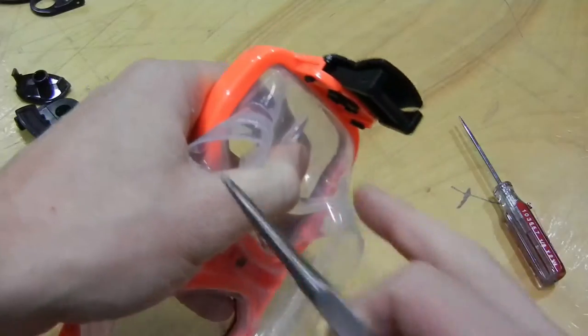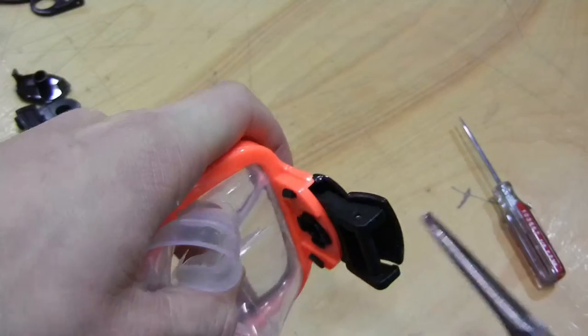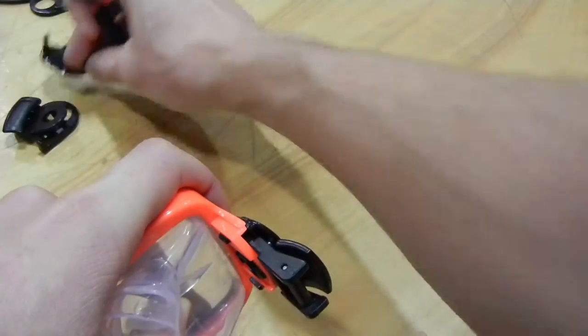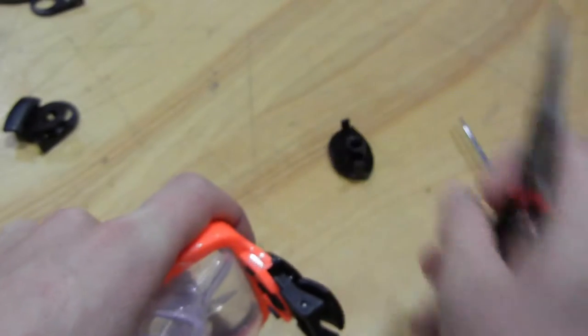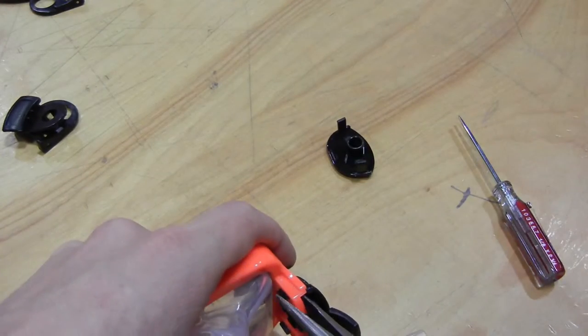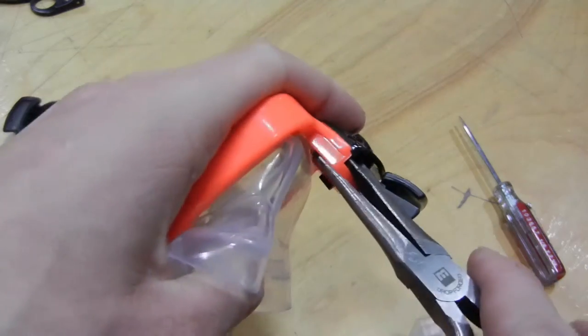And then push the silicone skirt down out of your way and the first piece you're taking off is this piece right here. Again, if this is broken, you don't have to do any uninstall, you'll just have to put pieces in which we'll show you at the end of the video.